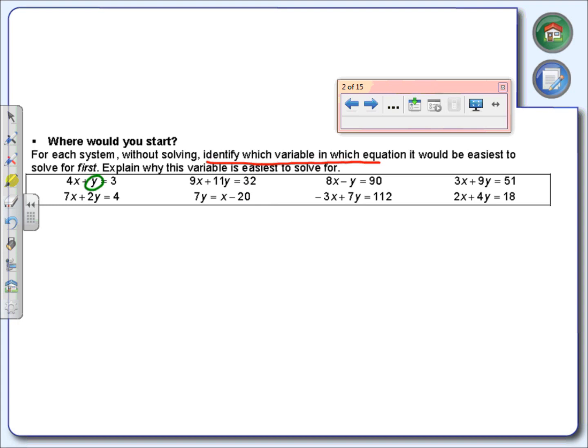If you look at the second system, which variable would you get by itself? For me, I'd probably choose the x right here. Would it make it wrong if you chose to get y by itself? No, it wouldn't make it wrong. It might make it a little bit harder, but it's not wrong. Look at the third equation - which one would you get by itself? Probably the y right here. I don't know if you've noticed, but all these ones I'm choosing have what in front of them? A one. So try to choose something that doesn't have a number in front of it or has a one. It's going to make it easier.